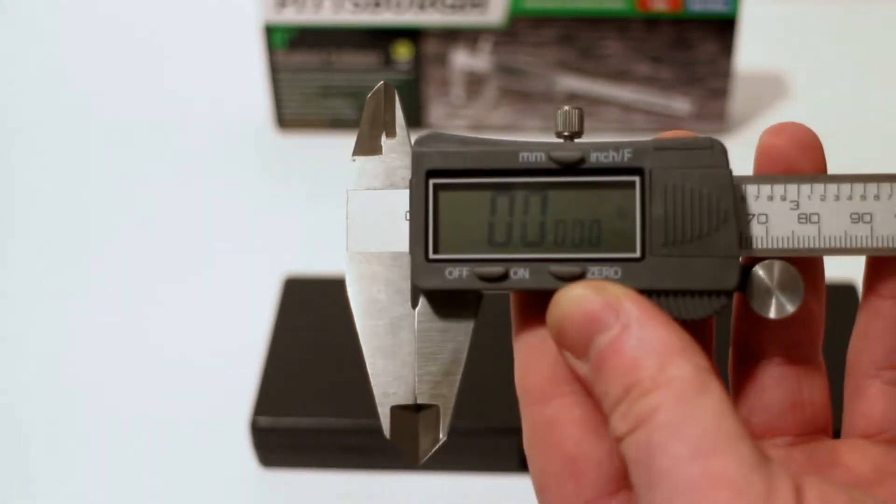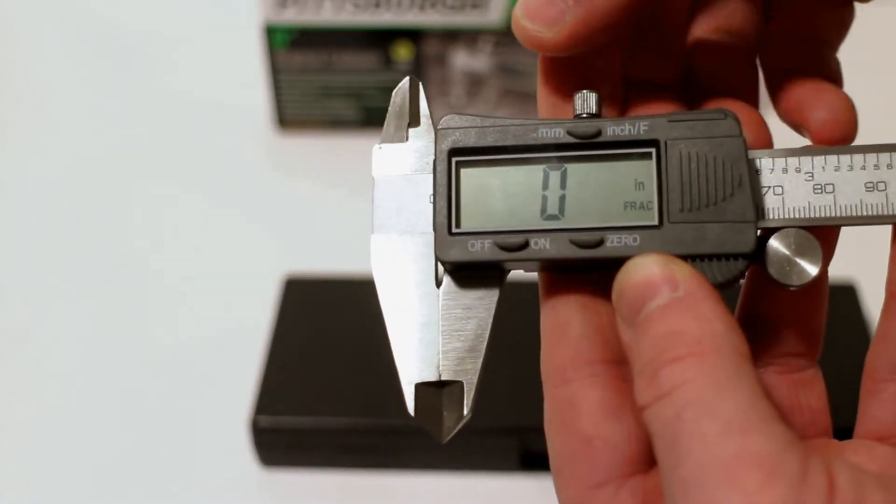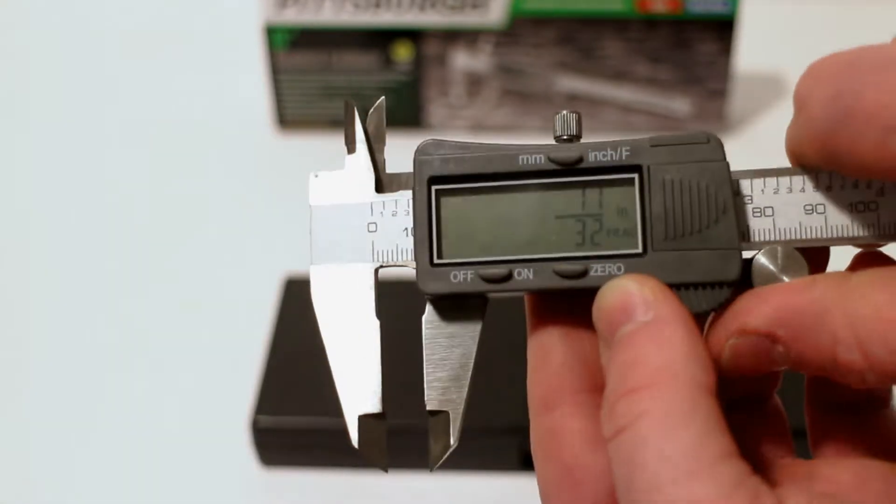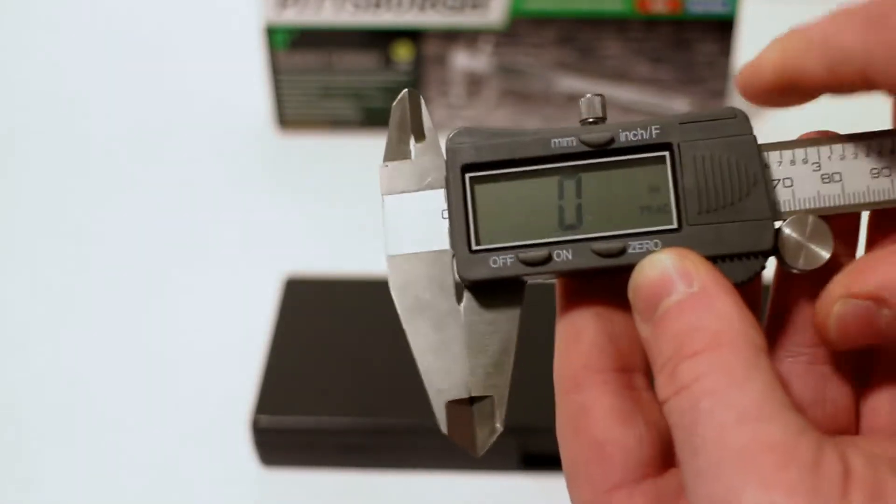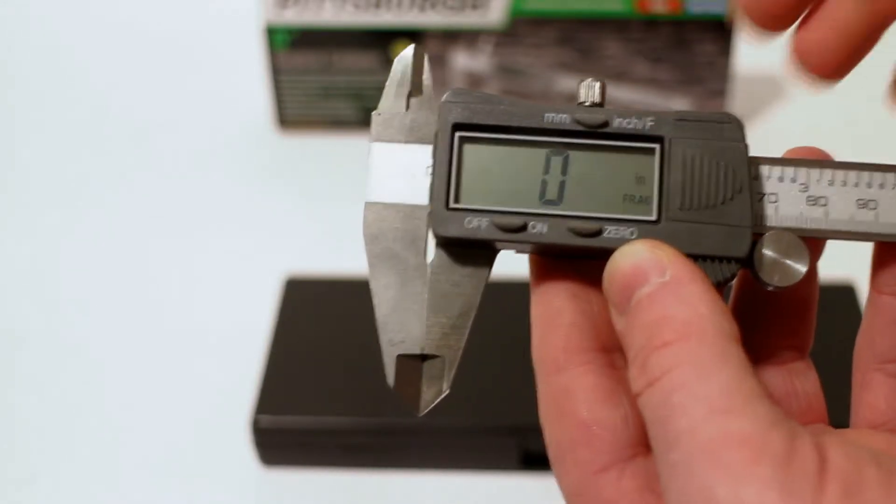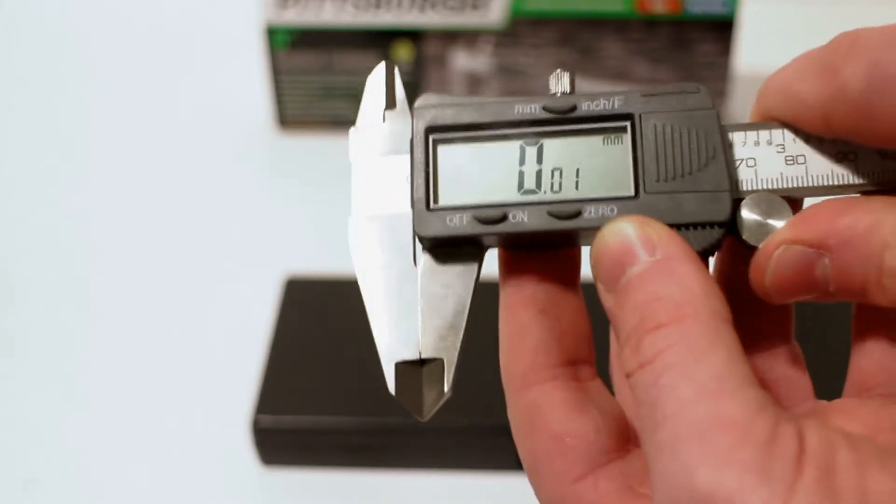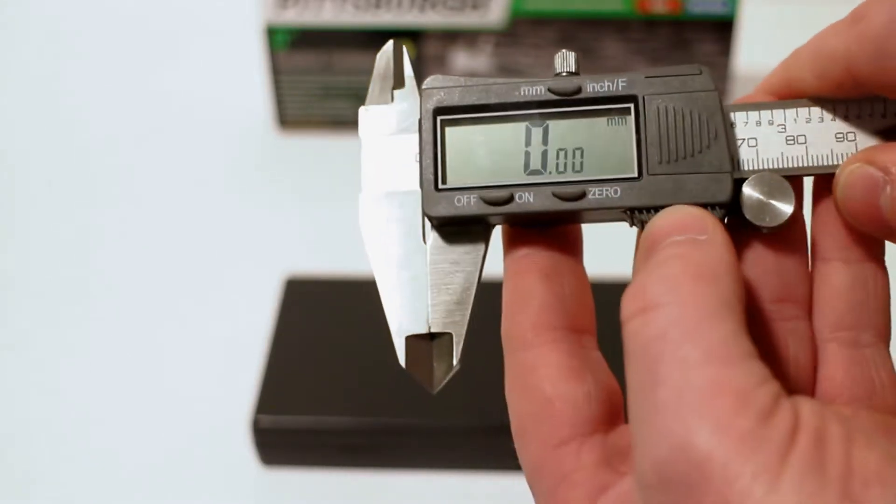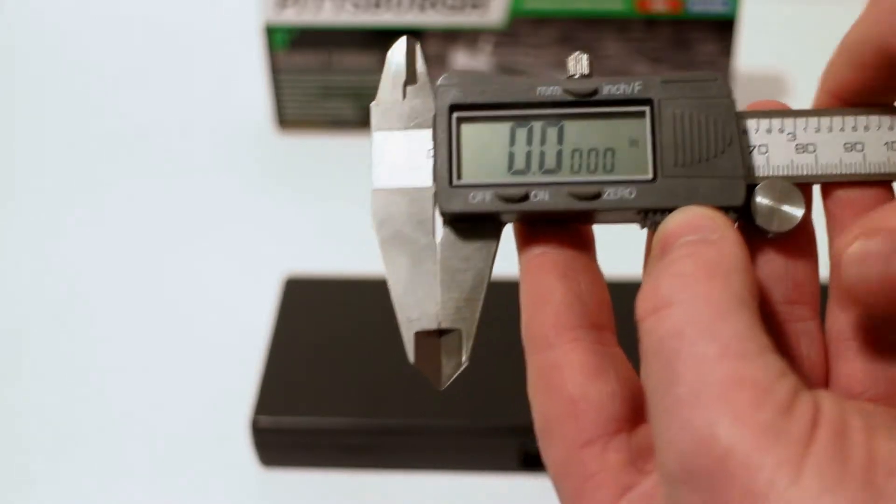As we see it here, we're looking at decimal for inches. If we hit it one more time, it gives us a fractional reading, which is always nice if you're reading off of directions or trying to make a real specific cut. Then we have our millimeter measurements as well as going back to inches and decimals.